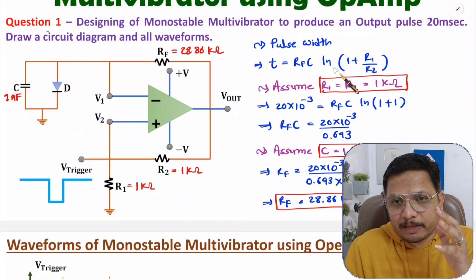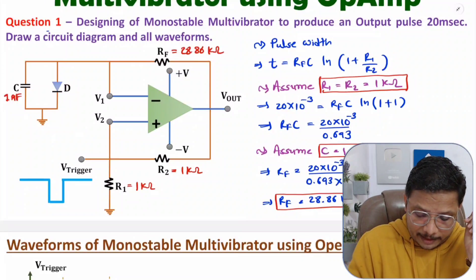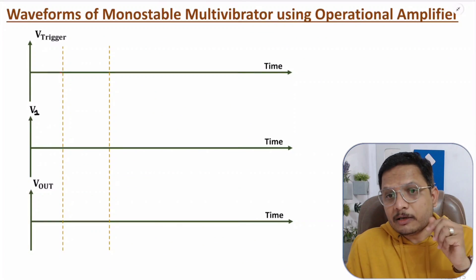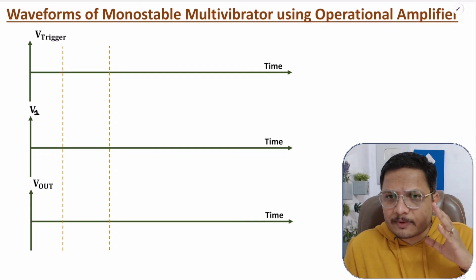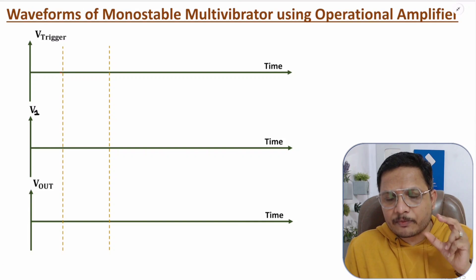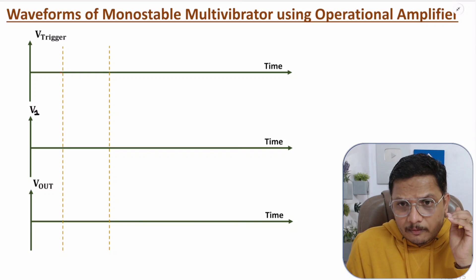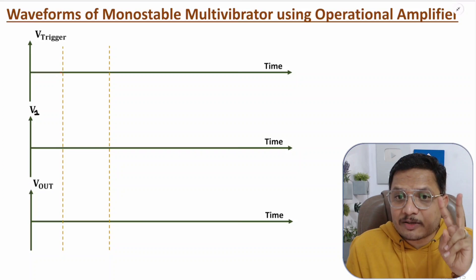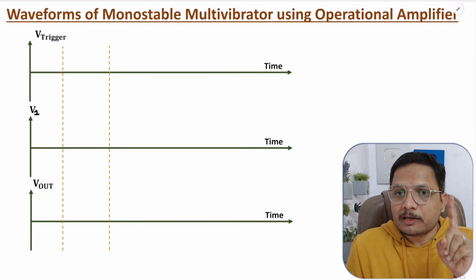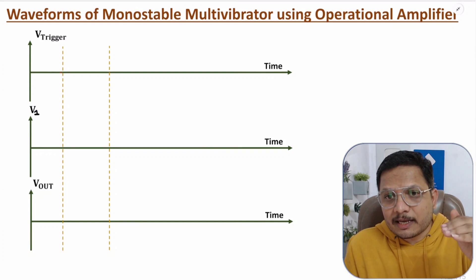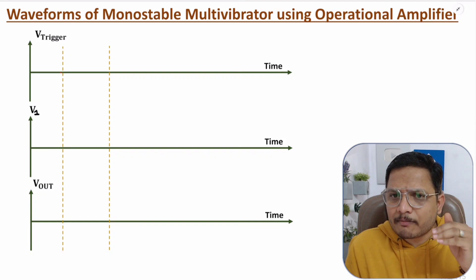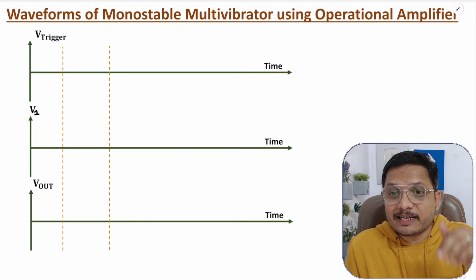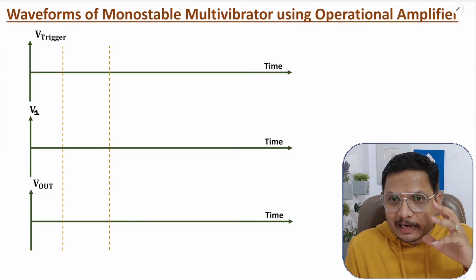Now I am going to explain the waveforms of this circuit. To understand the waveforms you need to go through my last two videos in which I explained waveforms as well as working. Here I will explain it in brief. With a monostable multivibrator there are two states: one is the stable state and the second is the quasi-stable state.